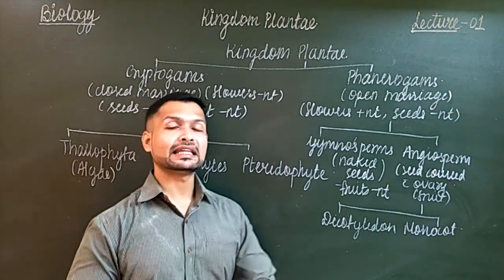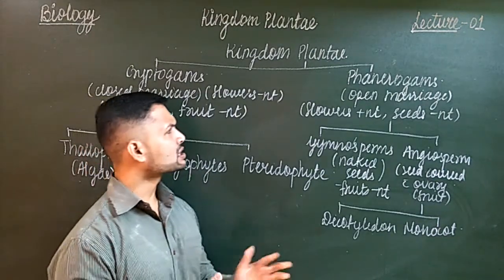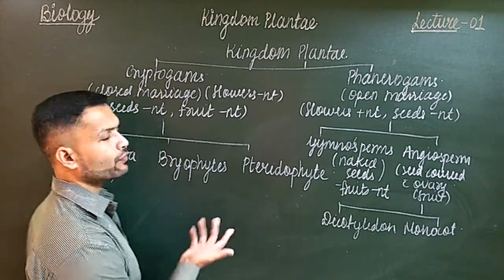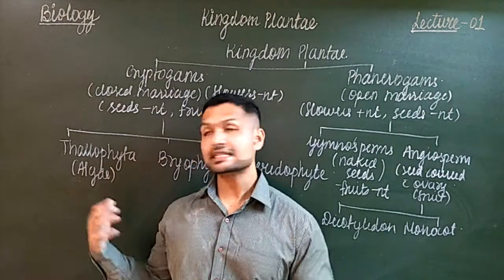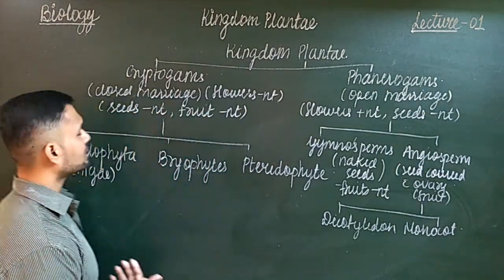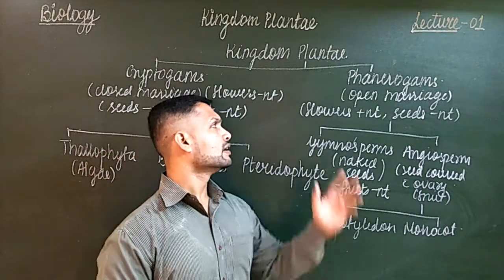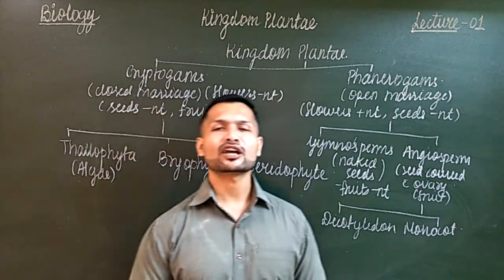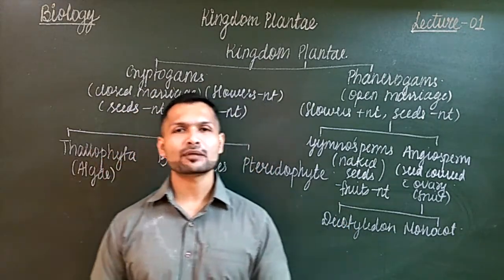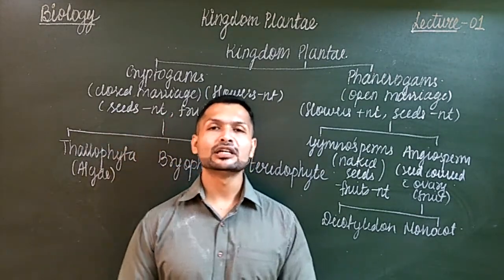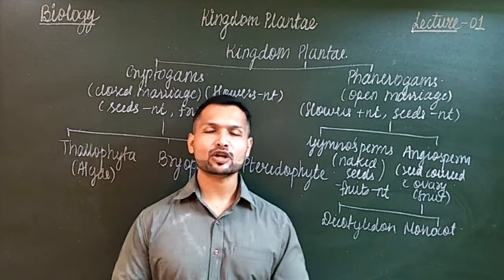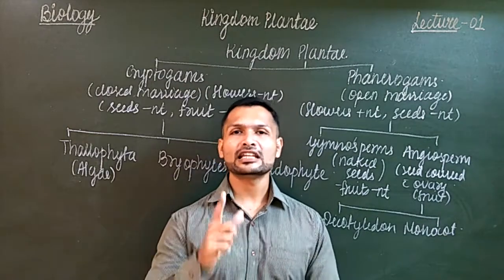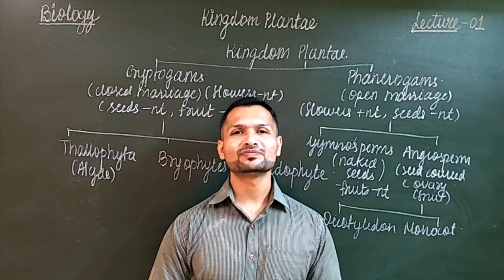In angiosperms we have two types: dicot plants where seeds produced have two cotyledons, and monocots where seeds have only one cotyledon. We will see that in detail in the next lecture. So this is the basic primary classification of Kingdom Plantae — cryptogams with algae, bryophytes, and pteridophytes; and phanerogams with gymnosperms and angiosperms, where angiosperms are further divided into dicots and monocots. In the next video we will start with the Thallophyta or algae basic characters. Hit the like button, subscribe the channel, share it with your friends, and hit the bell icon for notifications.